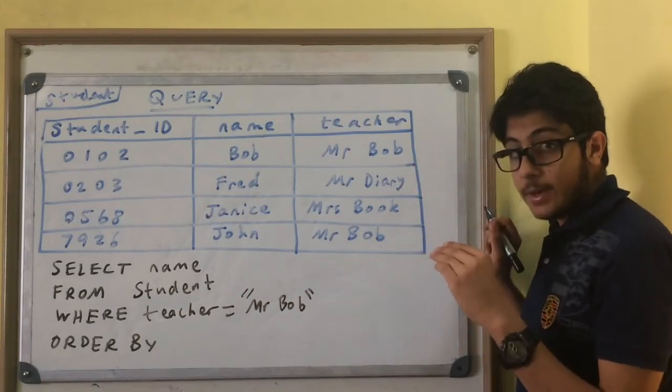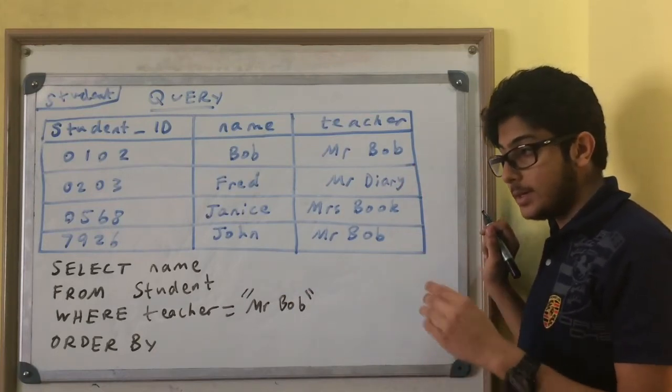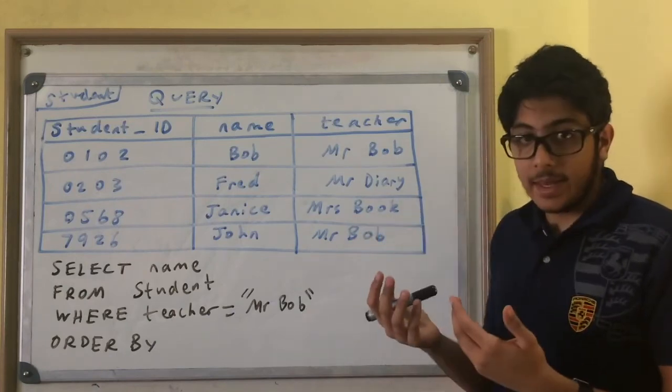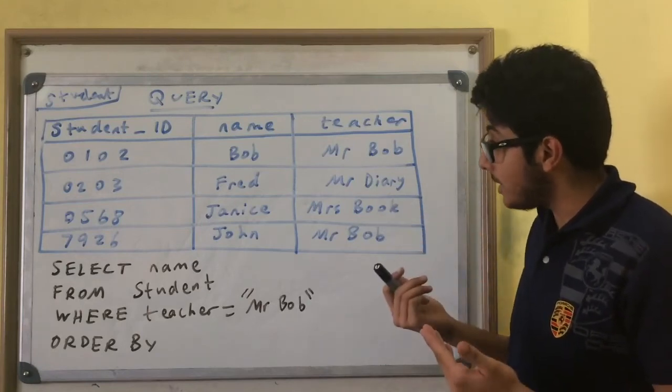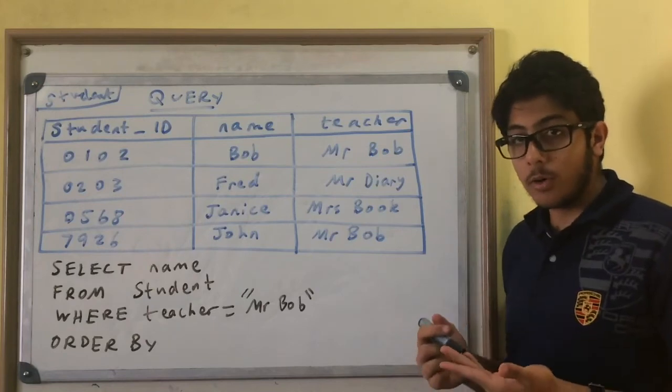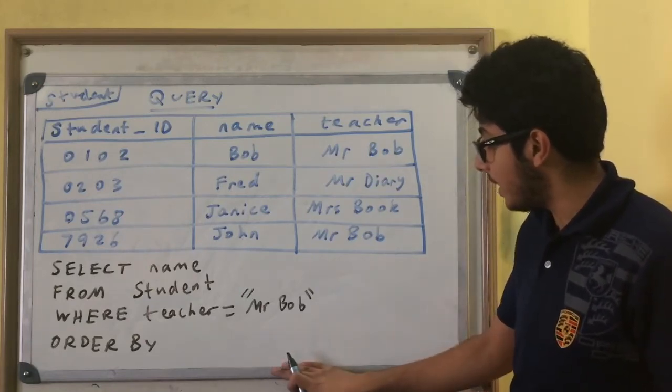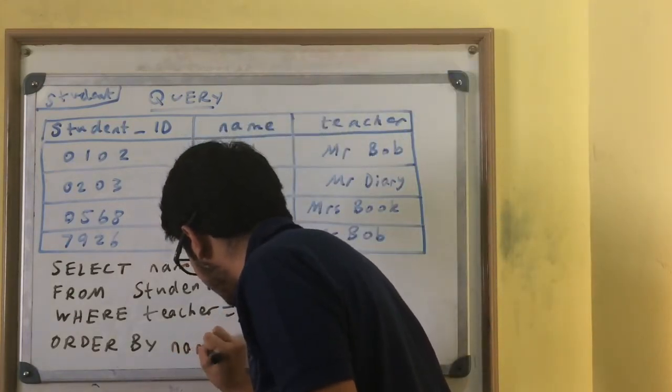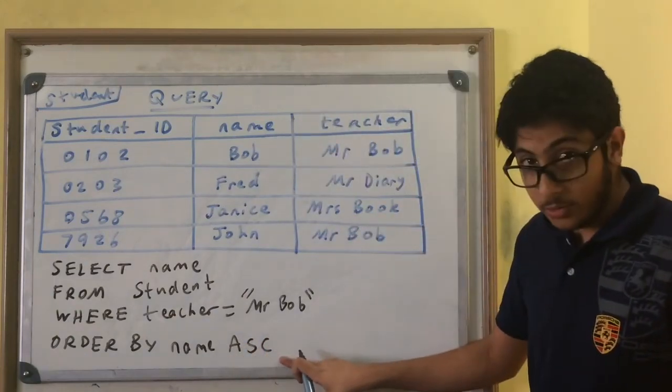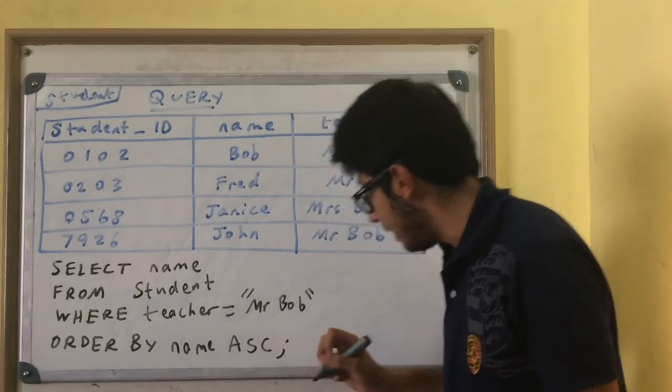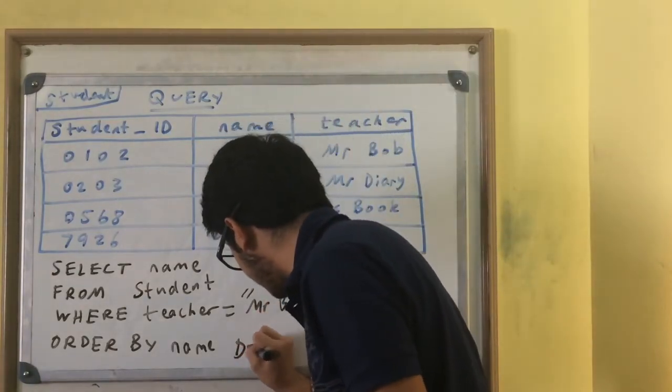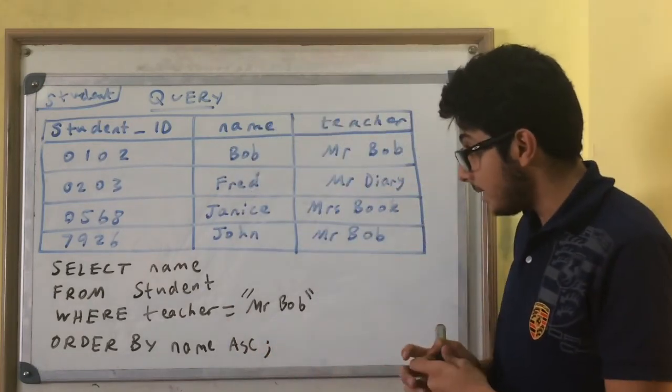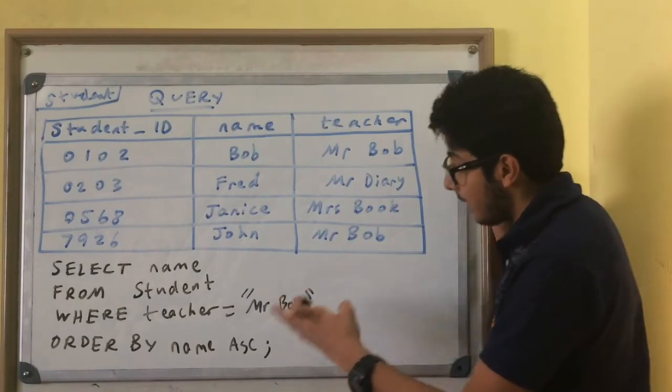So what do I want? I want every student Mr. Bob teaches, so the field name that I want is name. If you have two tables, then you would write the name of the table, student.name, so then it specifies from which table you want the thing to come from. FROM which table - the table's name is student. WHERE, what could be my condition? I want every student which Mr. Bob teaches, so the condition is going to be related to Mr. Bob. WHERE teacher is equal to Mr. Bob - remember it's a text data type. ORDER BY, I want the students' names to appear in ascending order.